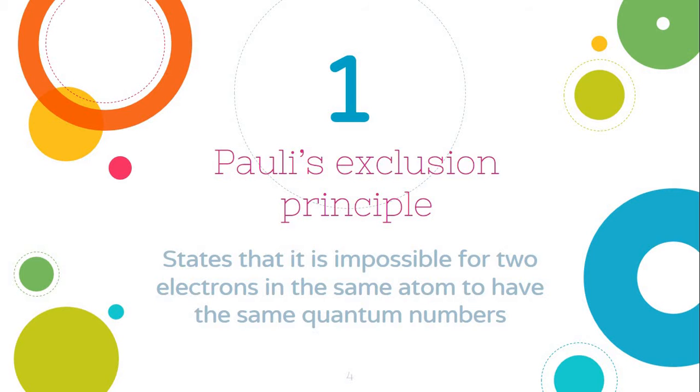Pauli's Exclusion Principle states that it is impossible for two electrons in the same atom to have the same quantum numbers.